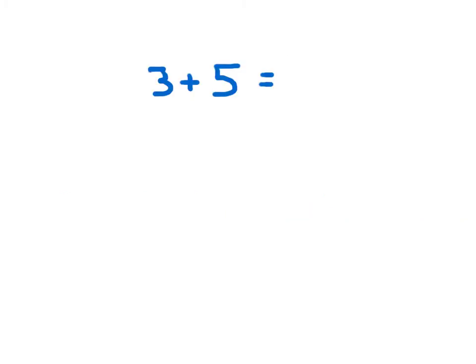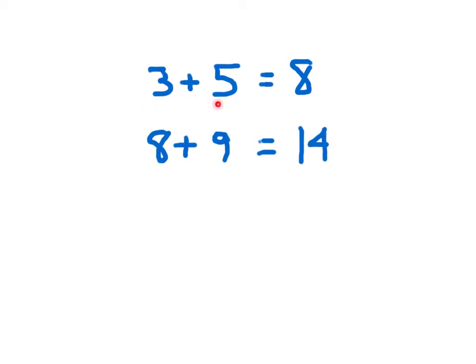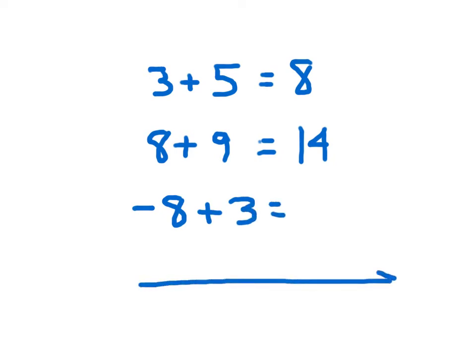We're familiar with 3 plus 5 — 3 plus 5 is 8. And 8 plus 9 is 14. So when we are adding here, we're adding a positive number to a positive number. Our number is just getting larger, getting bigger. Now, when we do the same thing and add to a negative number — negative 8 plus 3, for instance — it's also going to end up getting larger. One way to look at this is to take a look at a number line.